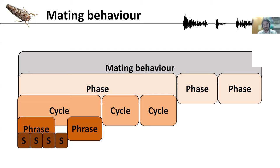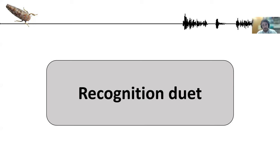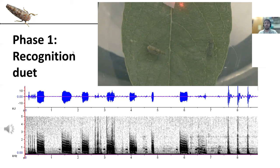A simpler representation shows just the phases. Orientus Ishidae has three phases during mating behavior: the recognition duet, the courtship — which can be divided into early and late — and a last phase called wings. Let's start with the recognition duet.